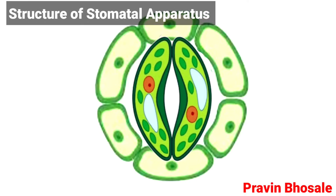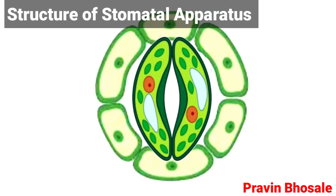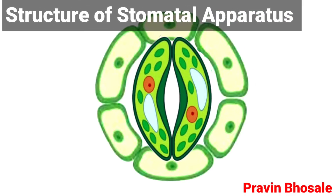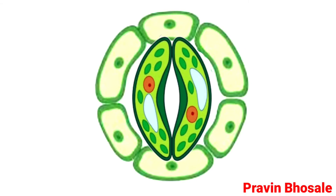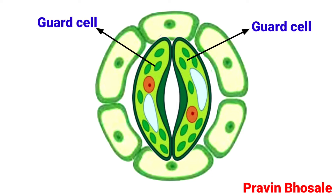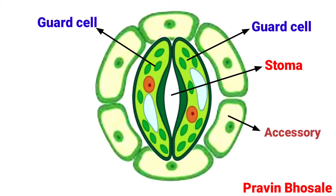Structure of stomatal apparatus. A typical stomatal apparatus consists of two guard cells, a stoma, and accessory cells.